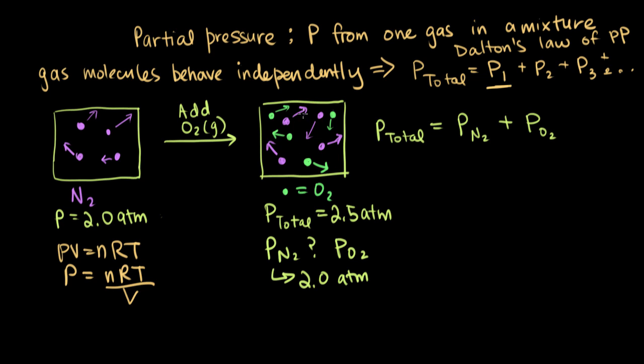And since we've done none of those things here, we just added another gas. Since we didn't change the moles of gas, temperature, or volume, the partial pressure, or the pressure exerted by the nitrogen gas molecules, is still going to be 2 atmospheres.